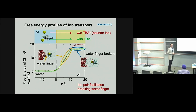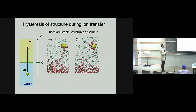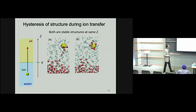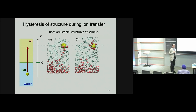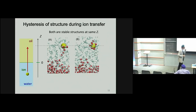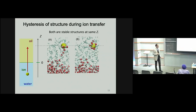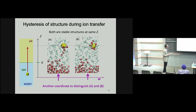During the MD simulations, we encountered a difficulty in treating the water finger structures. Sometimes we have one type of structure and sometimes another, even though the position of the ion is almost the same. Once a structure is formed, it persists and the two structures never exchange during the MD simulations, which creates a difficulty for proper sampling. This means the two structures should be treated as different states, and the Z coordinate alone is not sufficient to distinguish them.